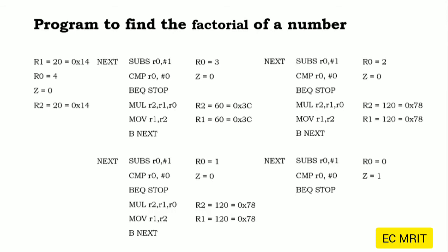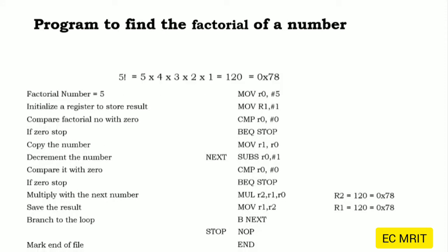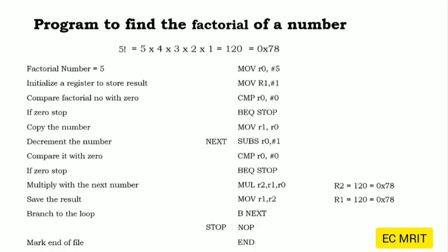Once the zero flag is set to 1, the BEQ stop instruction is checked — yes, it is equal, so it jumps to the stop instruction. No more multiplication is done. It jumps to the stop label which has a NOP instruction and the program ends using the END directive. Finally, the result register R1 holds the value 120, which is 0x78 in hexadecimal.